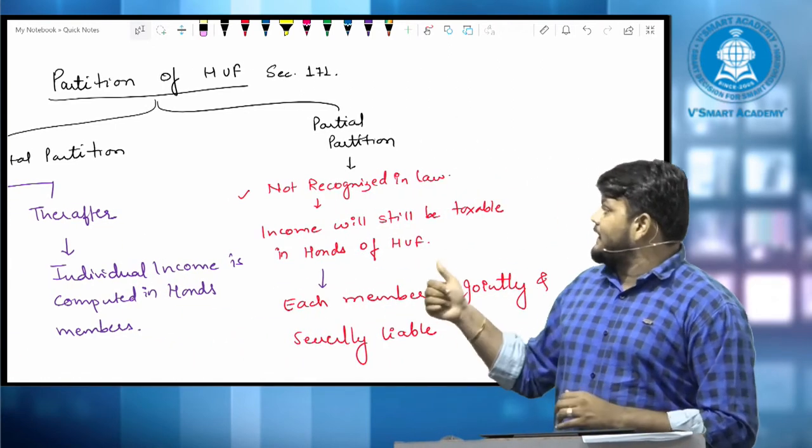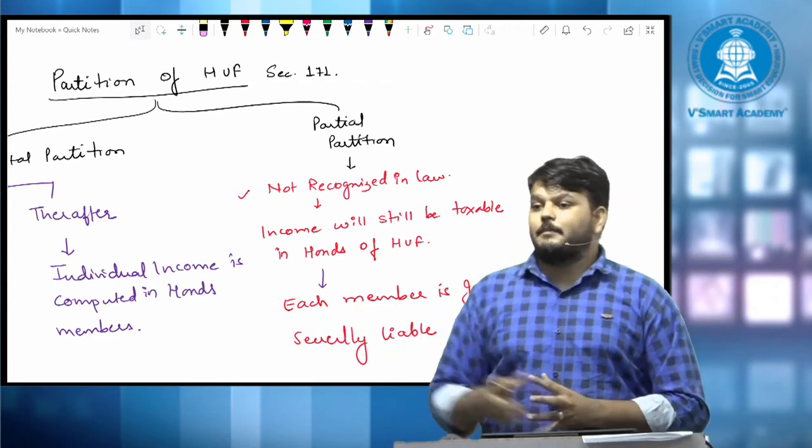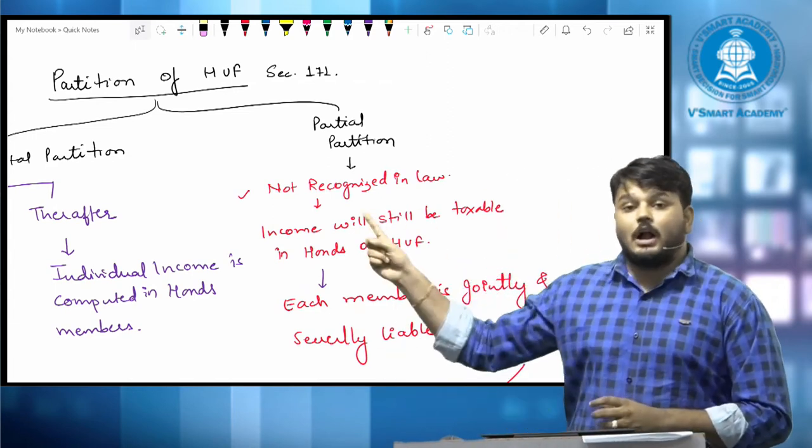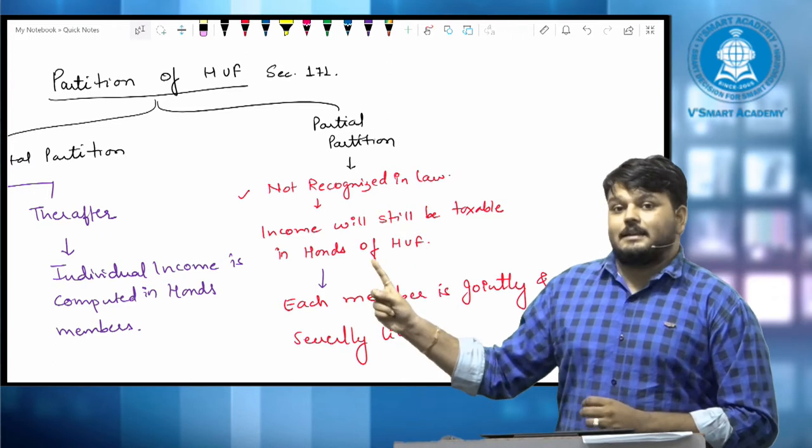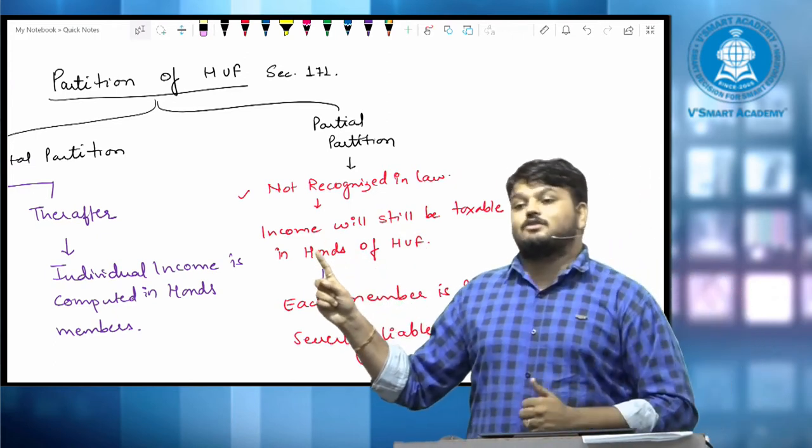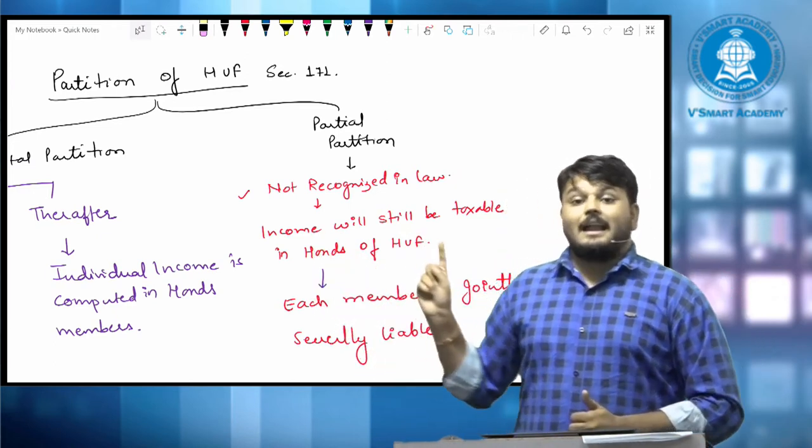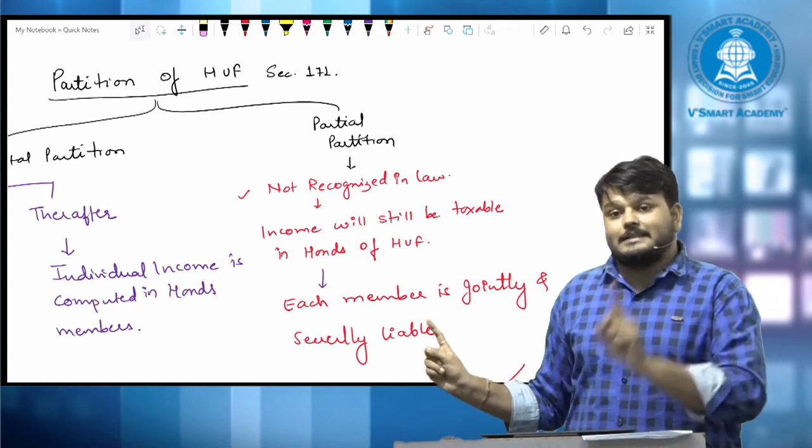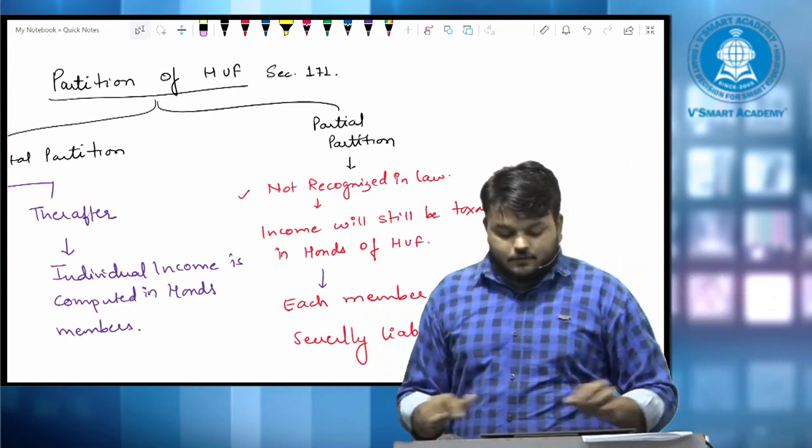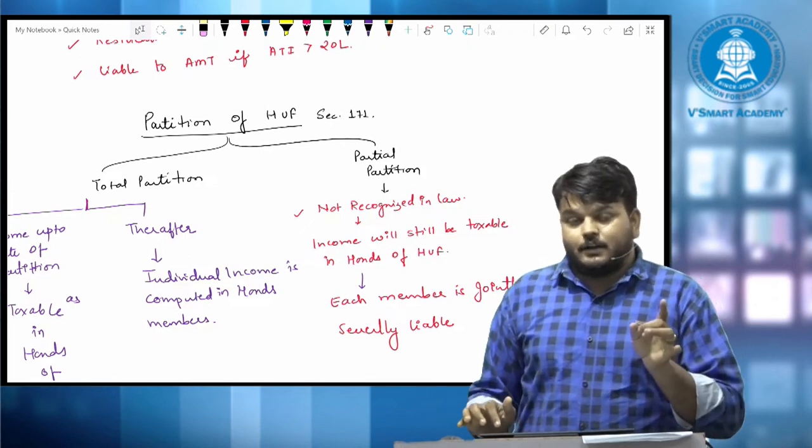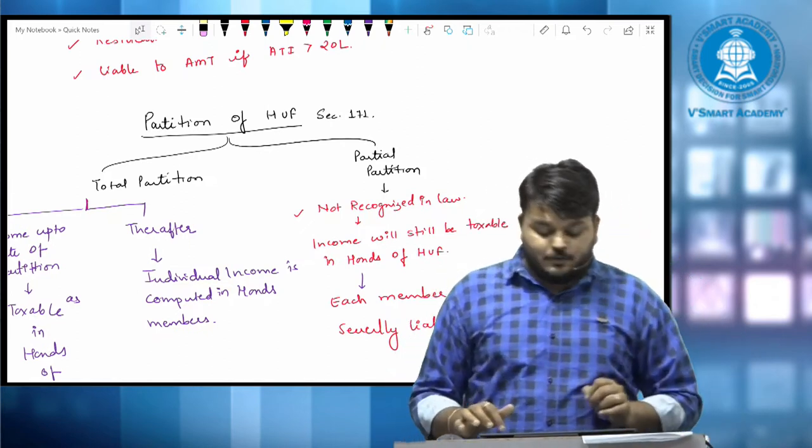If there is a partial partition, only one of the family member has been separated, it is not recognized by law and hence, income will be calculated in the hands of H.U.F. only. And all the members are jointly and severally liable for the purpose of tax liability. Yes or no? This was taxability of H.U.F., partition of H.U.F.